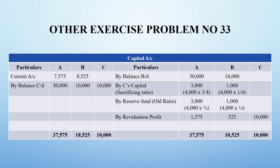We are getting only 7,575 rupees as the excess value - that is surplus in capital for A. For B, the grand total on the credit side is 18,525 rupees, but the required capital is 10,000, so 8,525 rupees is the surplus in capital that has to be transferred to B's current account. C brought in 10,000 as capital. Grand totals: 37,575 for A, 18,525 for B, and 10,000 for C.